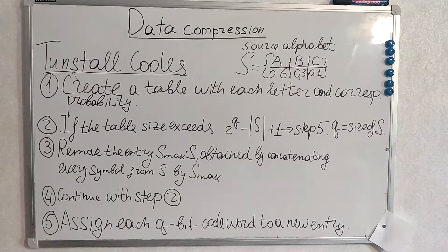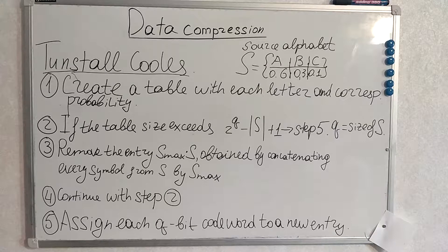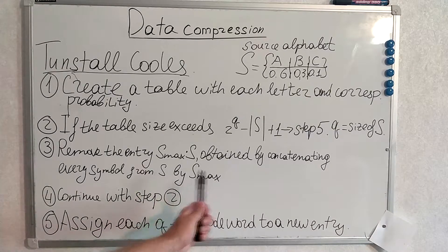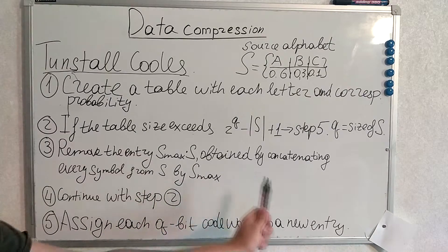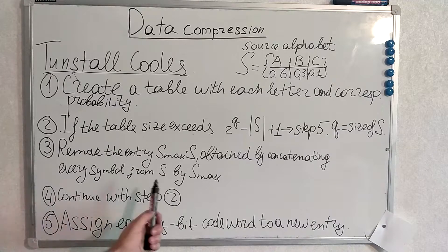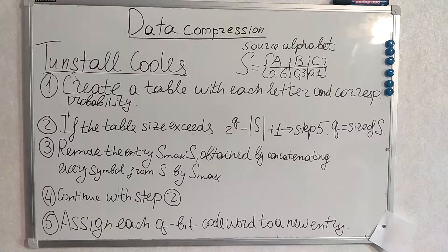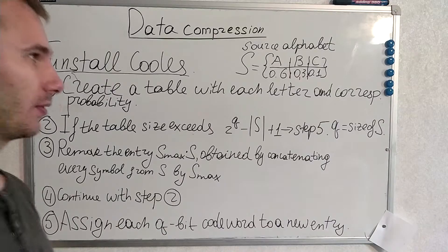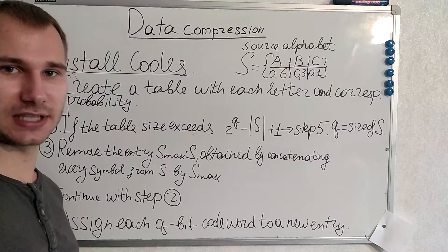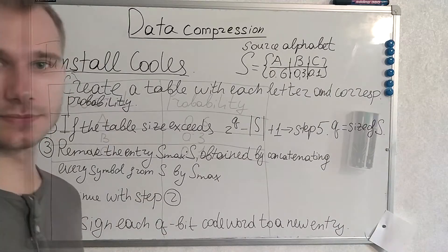S_max is the maximum probability — the biggest probability of a symbol in the table. New entries are obtained by concatenating every symbol from S by S_max, and we continue with step 2. Now we will go to the example and it will become clearer.